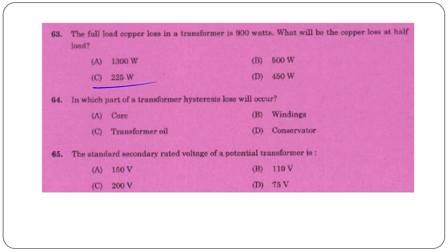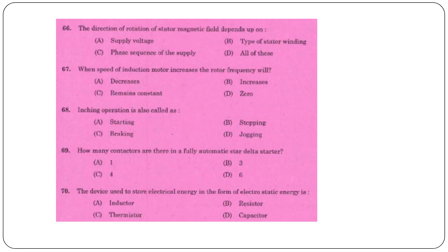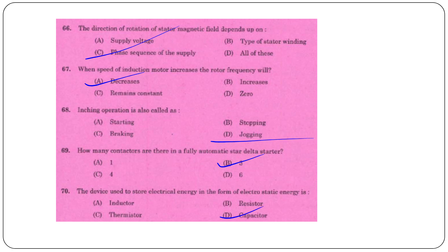Maximum efficiency condition in a transformer: copper loss equals iron loss. Full load copper loss is 900W; half load copper loss is 225W (= 900/4). Hysteresis loss in a transformer occurs in the core. Standard secondary rated voltage of a potential transformer is 110V. Direction of rotation of a stator magnetic field depends upon the phase sequence of the supply. When speed of an induction motor increases, rotor frequency decreases. Repeated short jogging is called inching. A fully automatic star-delta starter has 3 contactors. The device used to store electrical energy in electrostatic form is a capacitor.